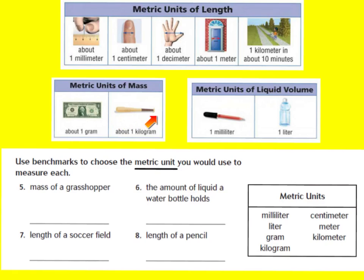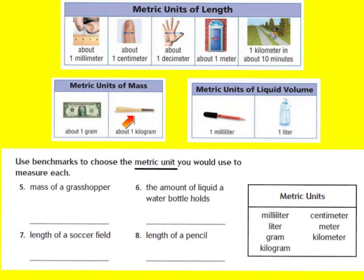Now 'kilo' actually means one thousand. It takes about a thousand grams to equal a kilogram. Therefore, it would take about a thousand dollar bills to equal the weight of a baseball bat.